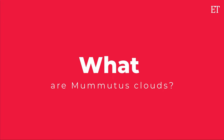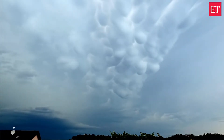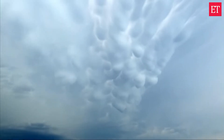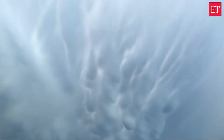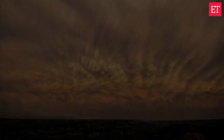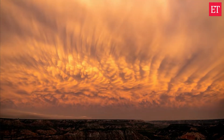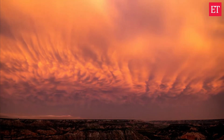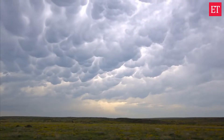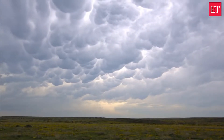What are mammatus clouds? Get ready to discover the unique and fascinating features of these distinctive cloud formations. Mammatus clouds are a rare and fascinating meteorological phenomenon that have captured the attention of people for centuries. These unique cloud formations are characterized by their rounded, bubble-like shapes that hang from the underside of a cloud layer, creating a striking and often ominous appearance in the sky.